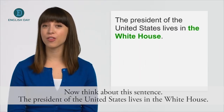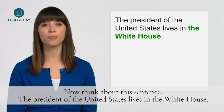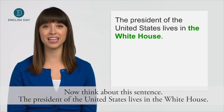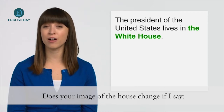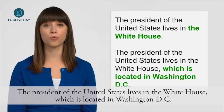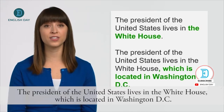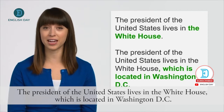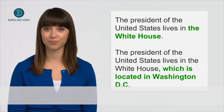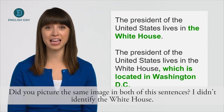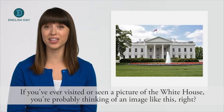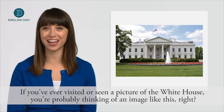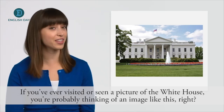Now think about this sentence: 'The President of the United States lives in the White House.' Does your image of the house change if I say, 'The President of the United States lives in the White House, which is located in Washington, D.C.'? Did you picture the same image in both of these sentences? I didn't identify the White House. If you've ever visited or seen a picture of the White House, you're probably thinking of an image like this, right?